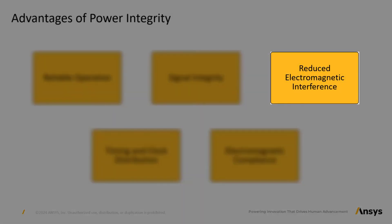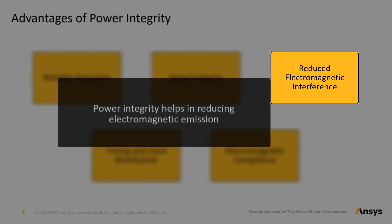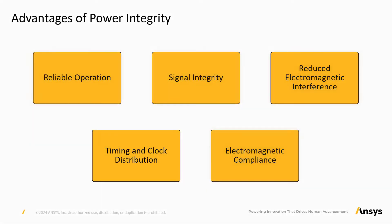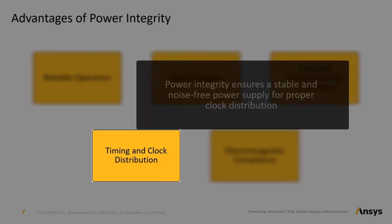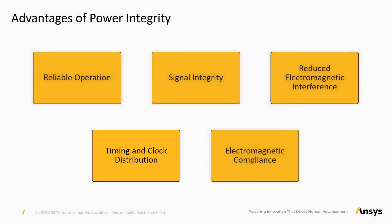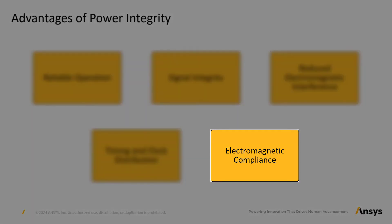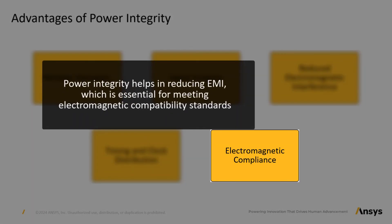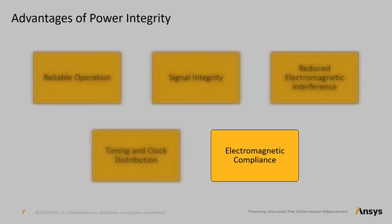Reduced electromagnetic interference: power integrity helps reduce electromagnetic emissions. Voltage fluctuations and noise in the power delivery network can generate electromagnetic radiation which may interfere with other nearby systems. Timing and clock distribution: a stable and noise-free power supply is crucial for proper clock distribution. Poor power integrity can lead to jitter or skew, causing timing violations. Electromagnetic compliance: power integrity helps in reducing EMI, which is essential for meeting electromagnetic compatibility (EMC) standards, crucial for products intended for customer use.